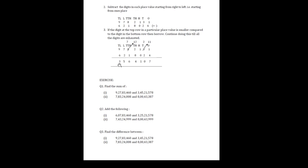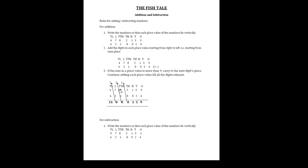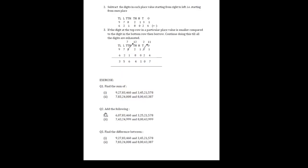Now we have some exercise problems. The first question says 'find the sum' — find the sum means addition, so you have to add the two numbers. For addition, you can write any number on the top and any number at the bottom — there is no hard and fast rule that the bigger number must be written on top.